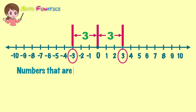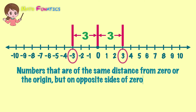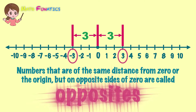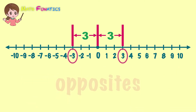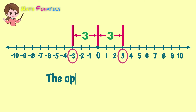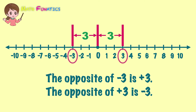Numbers that are of the same distance from 0 or the origin but on opposite sides of 0 are called opposites. So, the opposite of negative 3 is positive 3, and the opposite of positive 3 is negative 3.